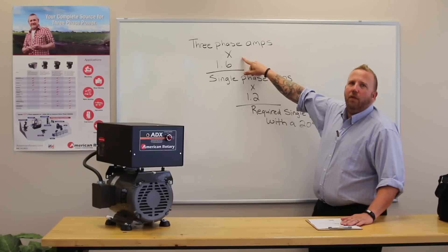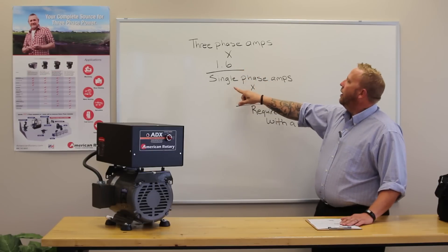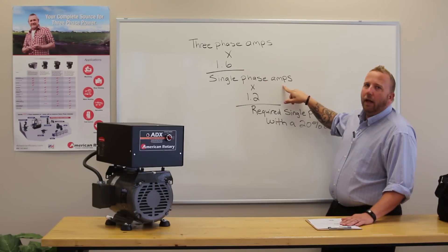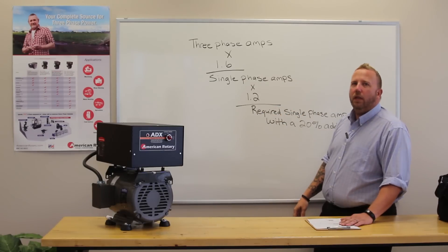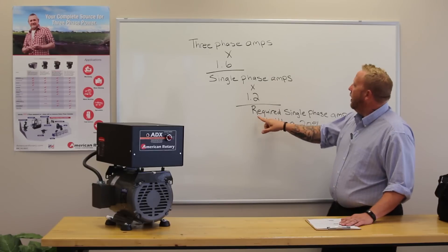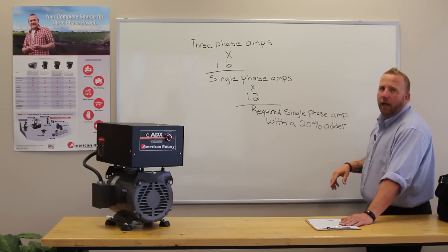If you take your three phase amps of your load, multiply that by 1.6, you're going to get your single phase amps. You multiply that by 1.2, that's 20% above what your load is, and you're going to get your required single phase amps with a 20% adder.